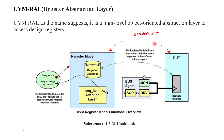On the other hand, we have backdoor access, where we write the register sequence in such a way that we completely bypass the bus agent and write directly to the DUT registers. With backdoor access, we can write data into and read data from the DUT registers, and this does not require any clock cycles. Hence, backdoor access is always faster compared to front door access.